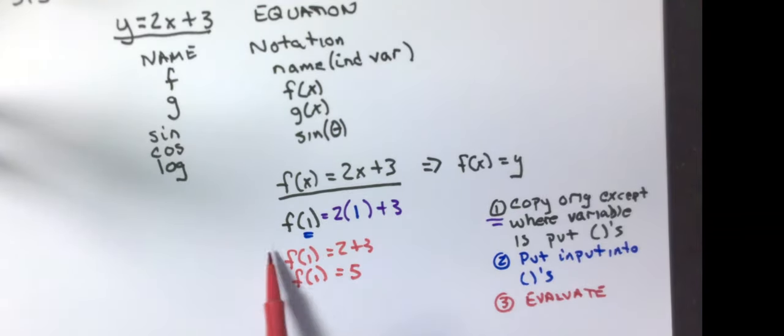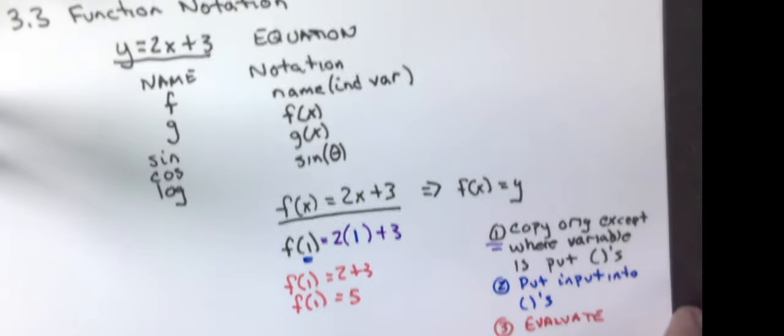So if you see f of 1, that just means put 1 in for every single x. If you see f of 4, that means put a 4 in for every single x. I'm going to do another example on paper. Then we're going to go through the IXL practice that you have.